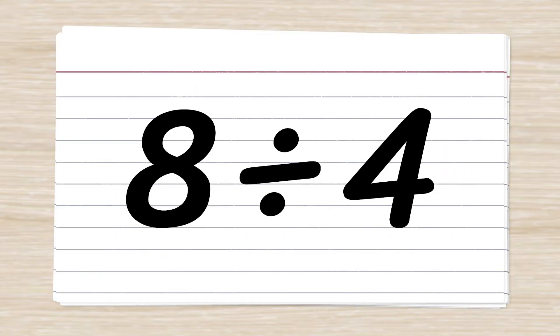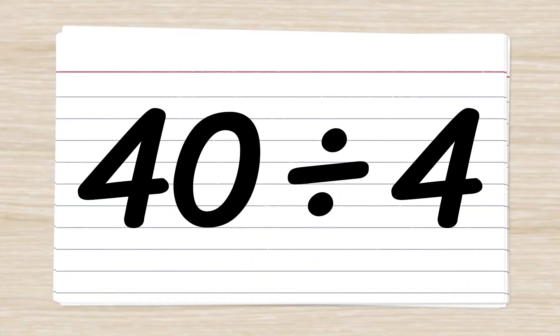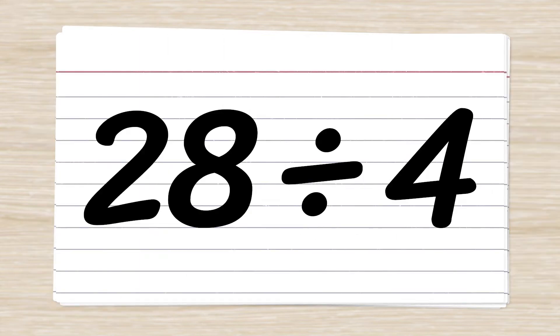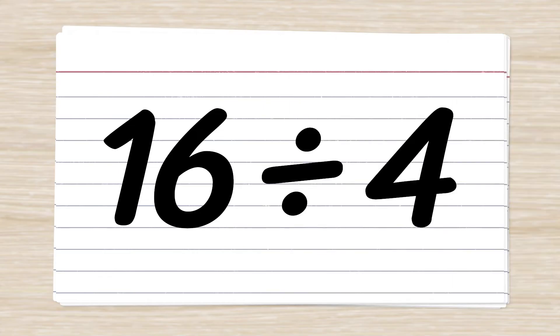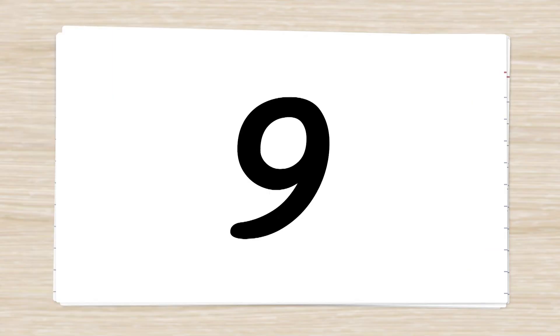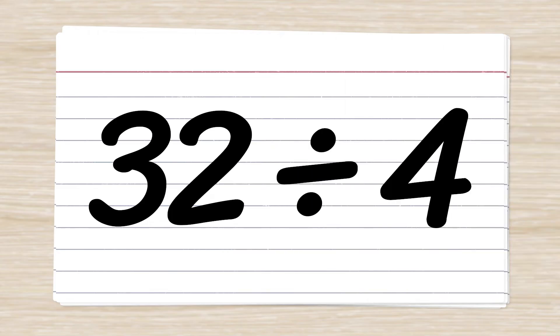Eight divided by four. Two. 40 divided by four. Ten. 24 divided by four. Six. 28 divided by four. Seven. 16 divided by four. Four. 36 divided by four. Nine. 32 divided by four. Eight.